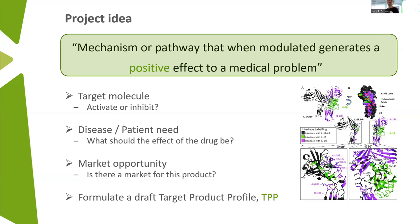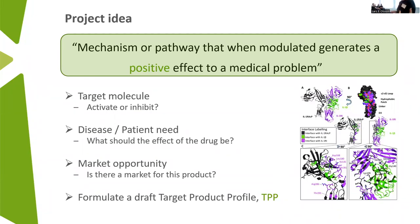Once you have your target molecule, you need to start thinking about whether you should activate or inhibit it. What is the disease and patient need? What is it really that this drug is going to achieve? Is there a marketplace for this? For us as scientists, this doesn't always come naturally, because we think if something is good there will always be a place for it. But in drug development and in the economic systems we live in, there's not always a place, even though it can work. So there needs to be a market opportunity, and this needs to go into the thinking.